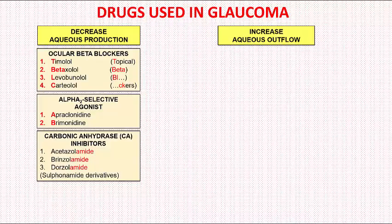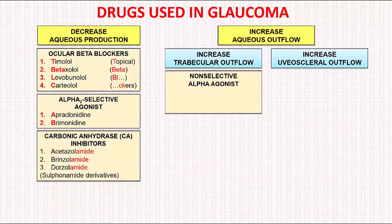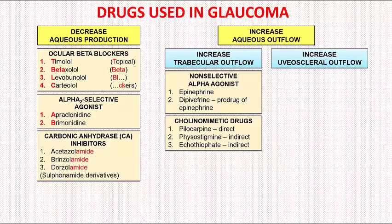Now we move to the drugs causing increased aqueous outflow. They are subdivided into those causing increased trabecular outflow and those causing increased uveoscleral outflow. The drugs increasing trabecular outflow are non-selective alpha agonists such as epinephrine and dipivefrin. Dipivefrin is a prodrug of epinephrine. The second class is cholinomimetic drugs such as pilocarpine, physostigmine, and ecothiopate. Pilocarpine is a direct-acting cholinergic drug, meaning it directly stimulates cholinergic receptors.